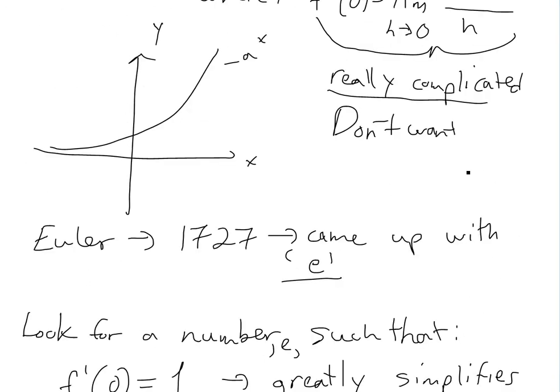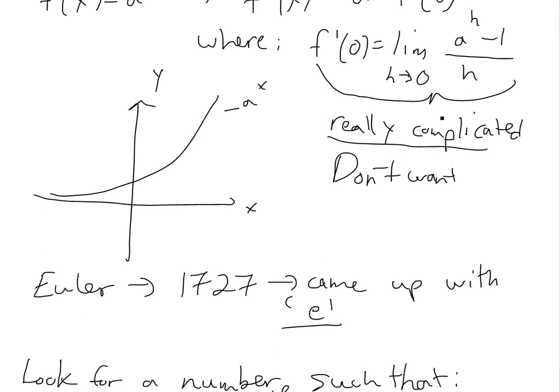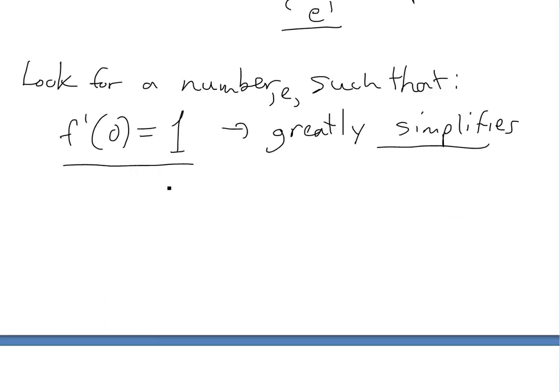So we get rid of this giant limit, which is really hard to calculate. So then we want a number such that the limit as h approaches zero of e to the h minus one over h equals one.